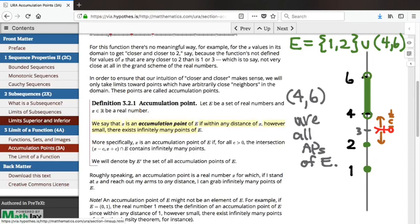Is that 3? No, not if my arms are short enough, right? If I stand at 3 and my arms are just 0.1 or something like that, I'm not going to reach any points of E at all. So 3 is not an accumulation point.